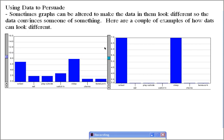Now we're up to using data to persuade and talking about how graphs can sometimes be misleading. So sometimes graphs can be altered to make the data look differently than it really is.